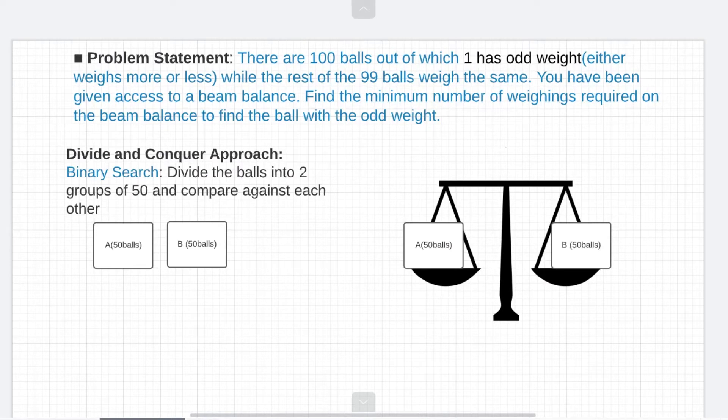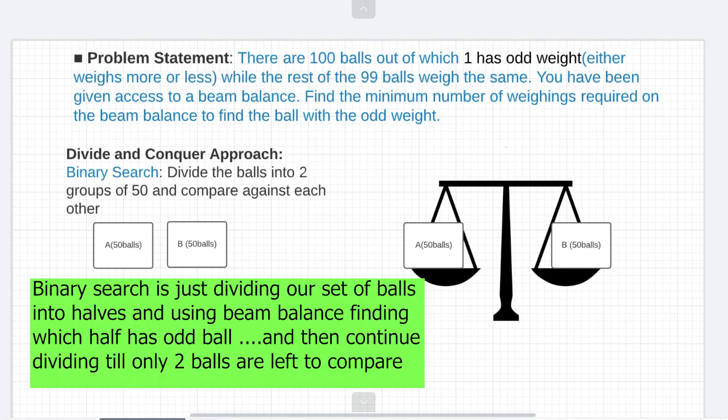So now let's look at the other approach which is divide and conquer. Now divide and conquer is a very common algorithmic approach towards a problem and the one that we'll be trying out first is called binary search. I'm sure a lot of you might be aware of the binary search algorithm. The algorithm basically says that divide your set into two halves and figure out which set has the odd ball and then divide that set further into two groups and so on and so forth till you find the odd ball.